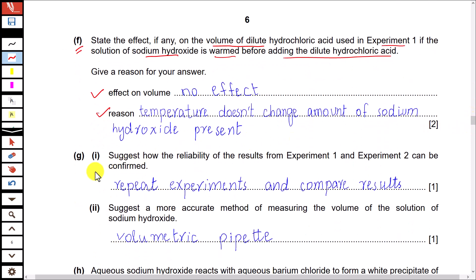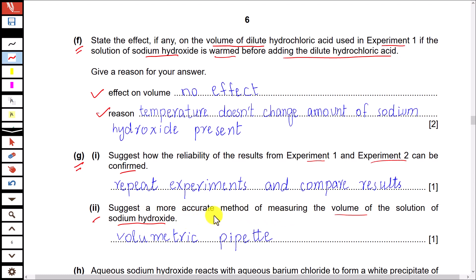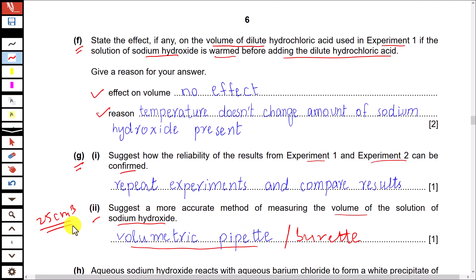Part G: suggest how the reliability of results from experiments 1 and 2 can be confirmed. The only way to check reliability is to repeat the experiment and compare the results from your repetitions. Also, suggest a more accurate method of measuring the volume of sodium hydroxide solution. The student used a measuring cylinder, but it would be more accurate to use a volumetric pipette or even a burette, because a volumetric pipette measures the fixed volume required — 25 cm³ in this case — and a burette measures with accuracy of 0.1 cm³ instead of the less accurate measuring cylinder.